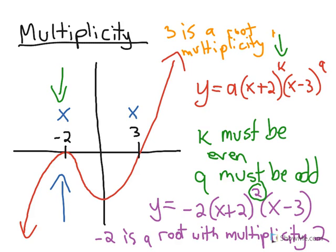We can comment 1, and that's also called a simple root sometimes. So we can comment on whether the multiplicity is even or odd based on the picture, and then from the full equation, we can comment on the exact value of the multiplicity. So in this case, it was 2 and 1.